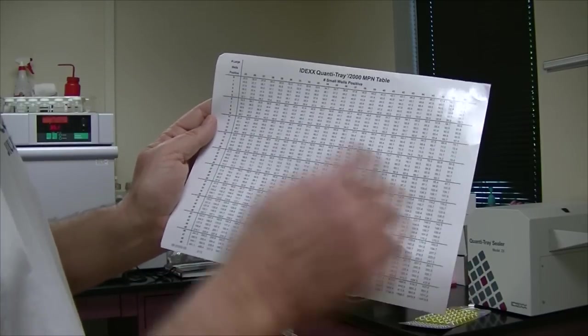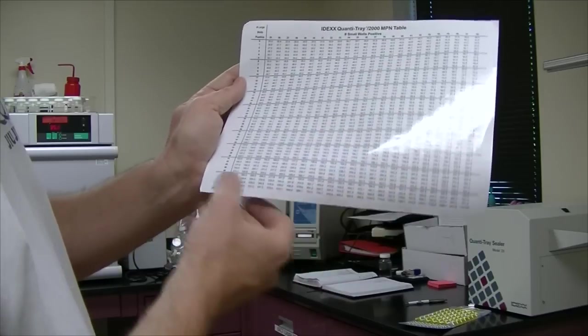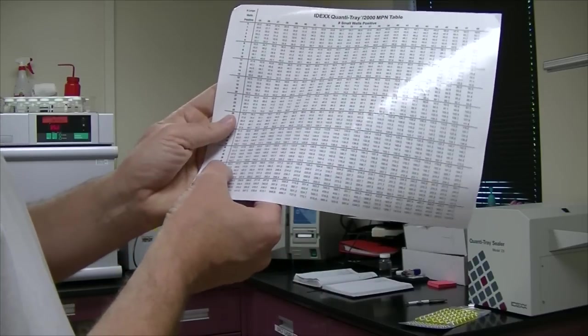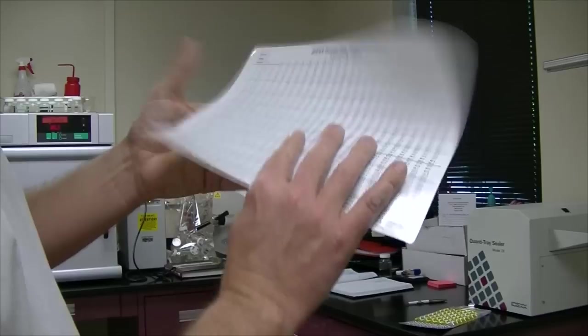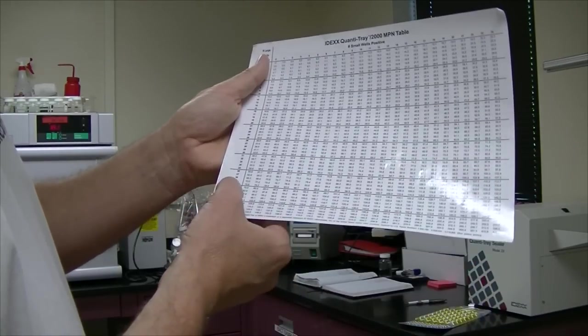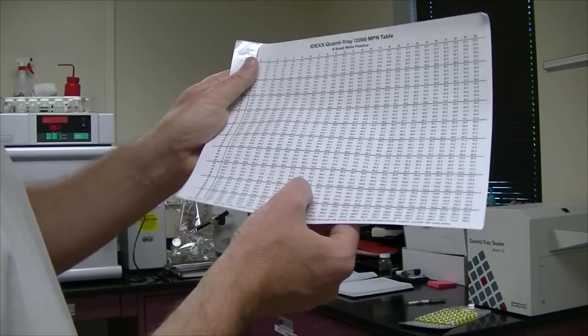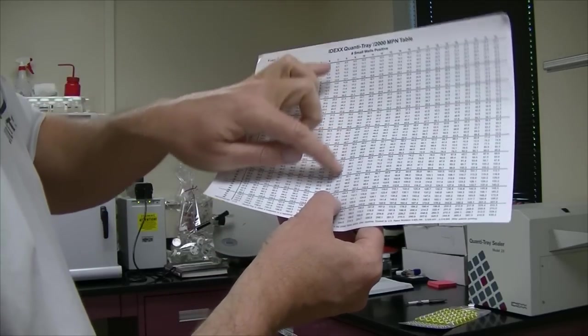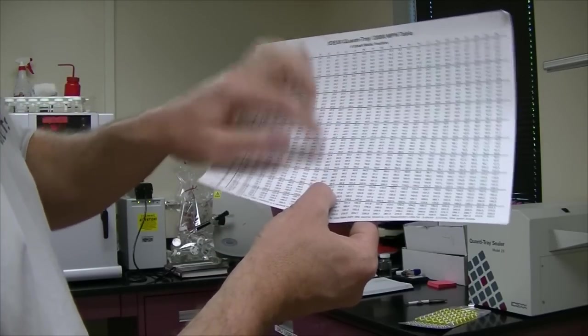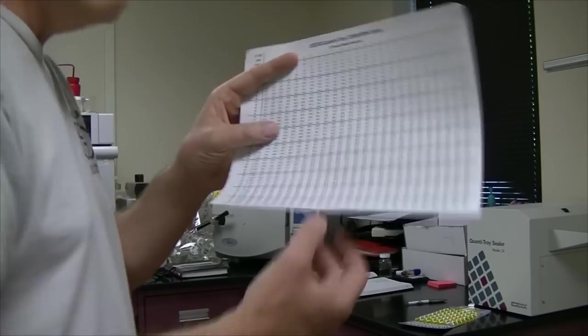Then you look right at the chart here. Large positives down here, small wells positive there. So let's say 42 of the large, wrong side, because it carries over in case the small ones are done. So 42 large, you carry right over until nine of the small. You carry that down. And your most probable number is 107.6. That is coliform bacteria.